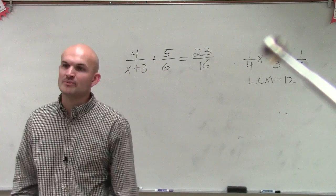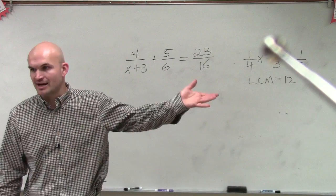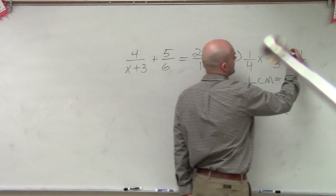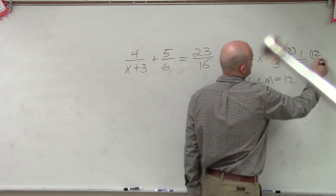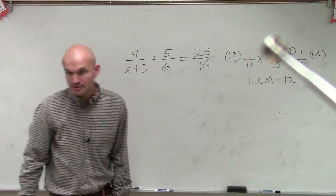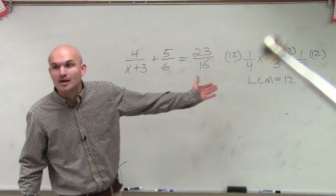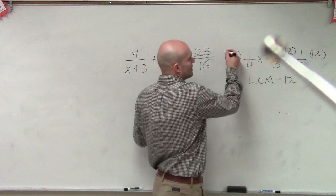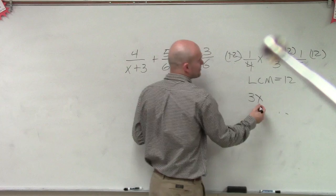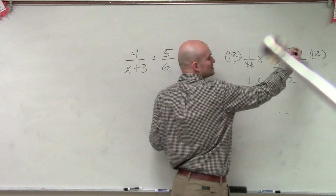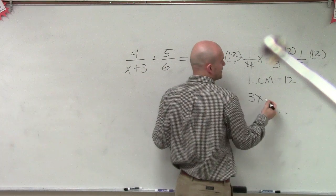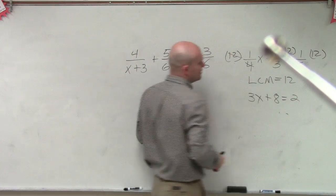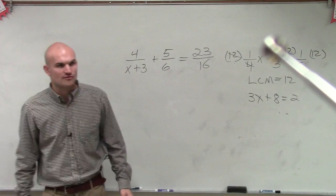And then once I know what that value is, if I multiply everything by 12, I am going to keep an equivalent equation, meaning I'm not changing the problem. But what I'm doing is I'm changing how the problem's represented. Because now 12 divided by 4 gives me 3x. 2 times 12 is 24 divided by 3 is going to give me 8, equals 12 divided by 6 equals 2. Now I have an equation that's pretty simple to solve, right?